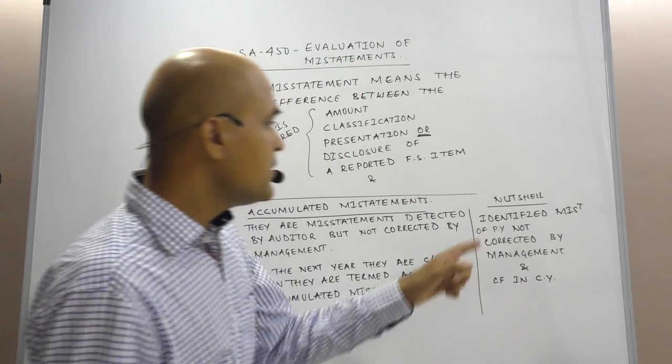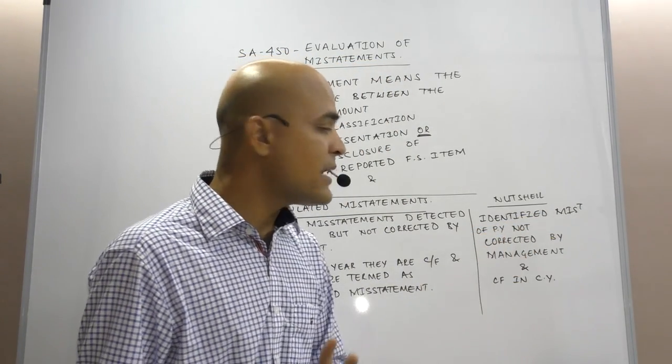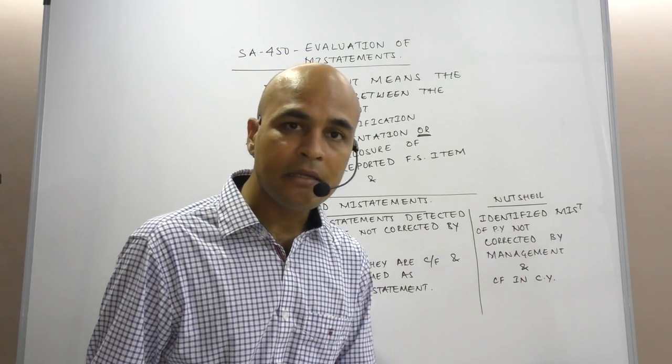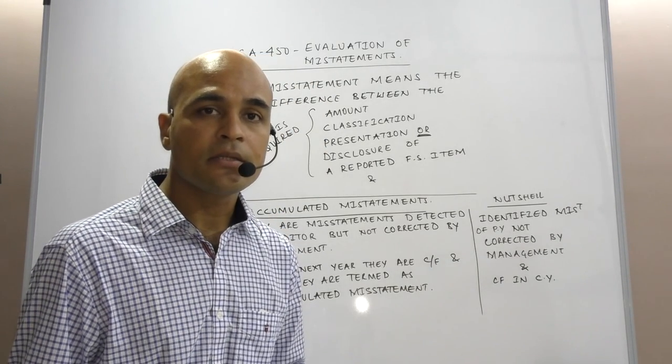In previous year, there is an identified misstatement which is not corrected by management and therefore it is carried forward in current year. And such misstatements are termed as accumulated misstatements.